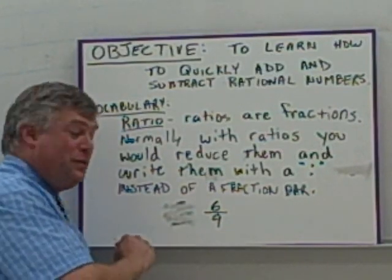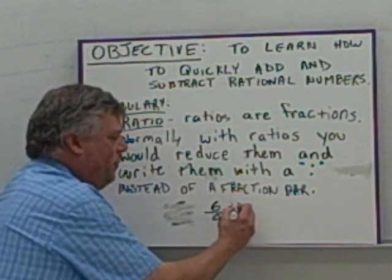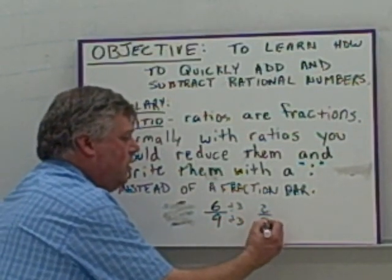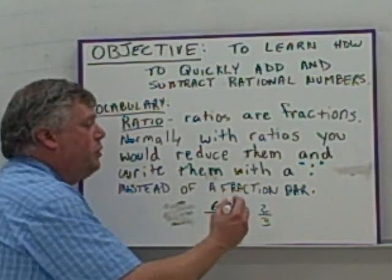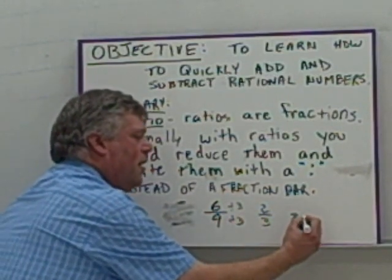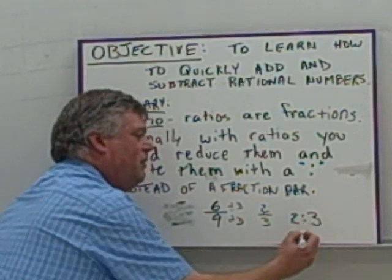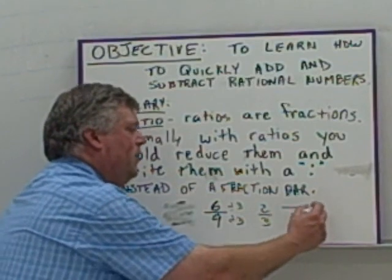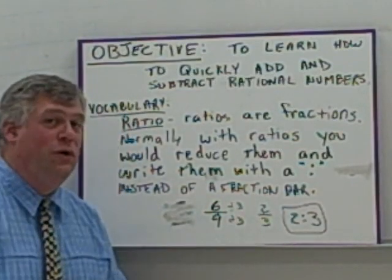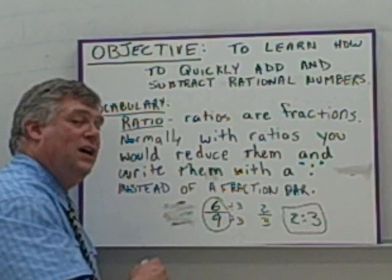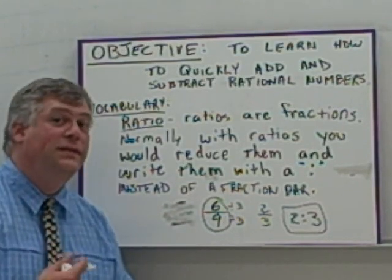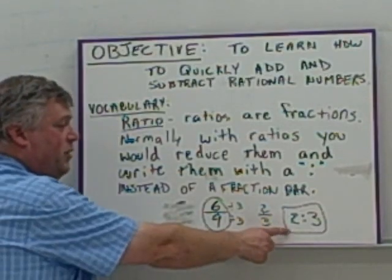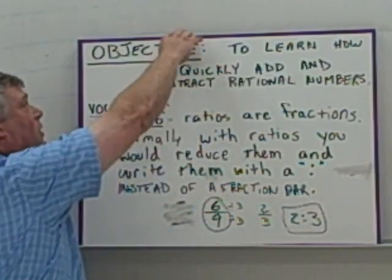both of those are divisible by three, so we divide them both by three, reducing it down to 2/3, which we would then write as a ratio with a colon instead of a fraction bar. So this would be what you would see a ratio written as, as opposed to 6/9. Are they equal? Yes. But that's the ratio, that's writing a fraction as a ratio, that's what it would look like.